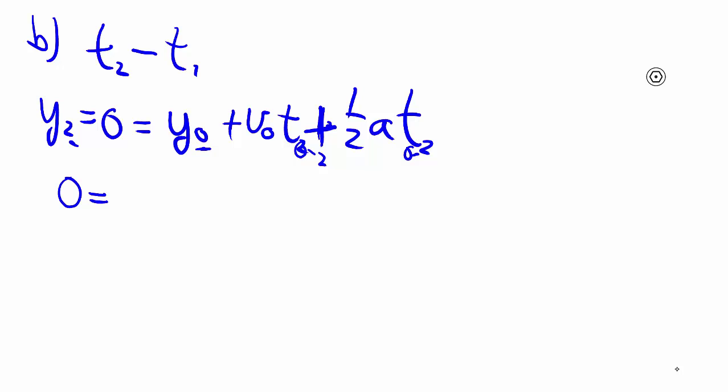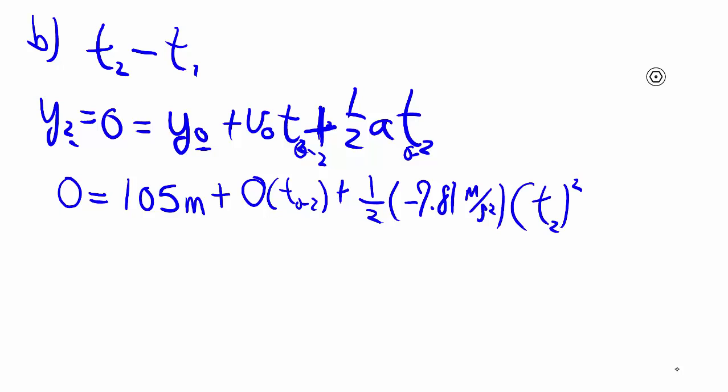a remains the same, so we know this is 0 is equal to 105 meters plus 0 height, which is fortunate because if we do have a v0 then we would have to use the quadratic formula, times t2 square. So that goes away.